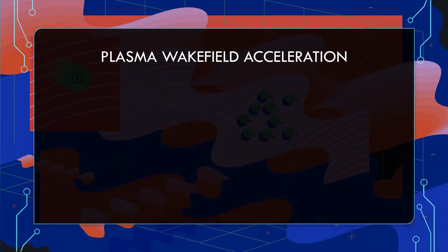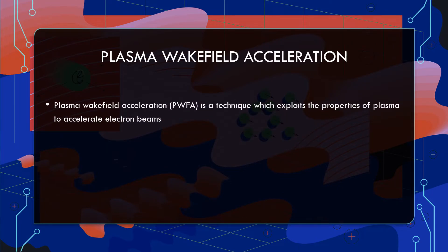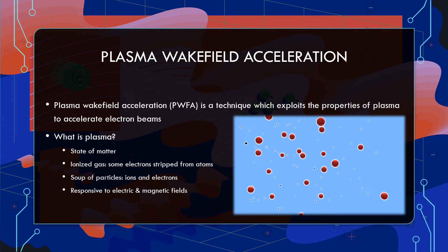Plasma wakefield acceleration is a promising technique that cleverly exploits the properties of plasma to accelerate electron beams. To understand how plasma can be manipulated, we should first know what it is. Plasma is a state of matter resulting when a gas is ionized, meaning some of the electrons have been stripped from their atoms, transitioning the gas to a soup of heavy, positively charged ions and very light, negatively charged electrons — forming a state of matter that is very responsive to electric and magnetic fields.